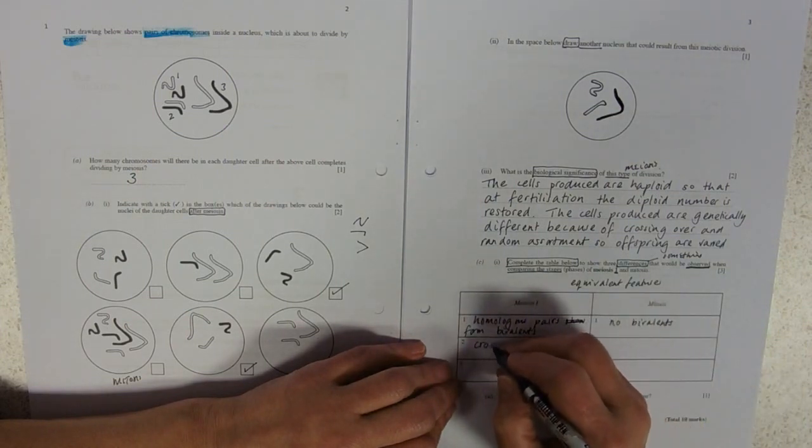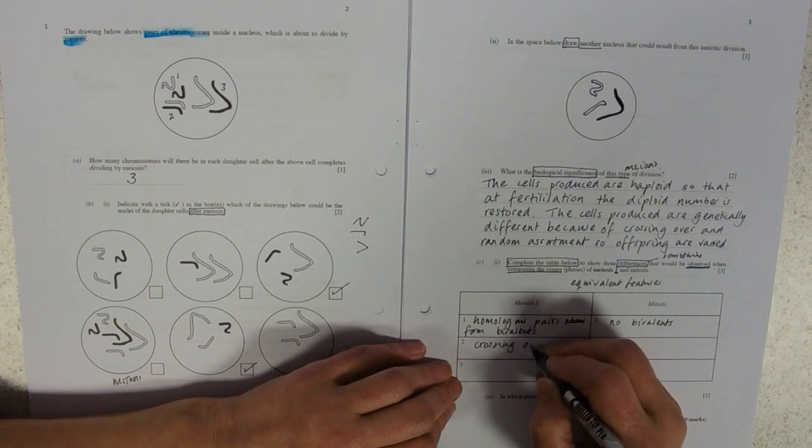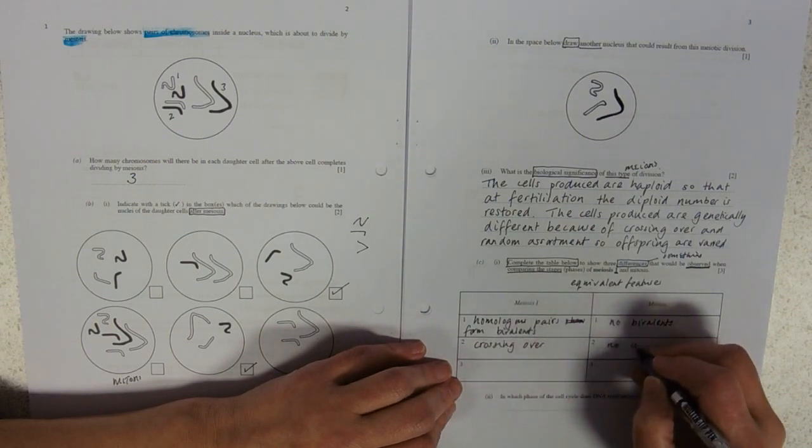And here then I can just write 'no bivalents.' Crossing over. Crossing over, no crossing over.